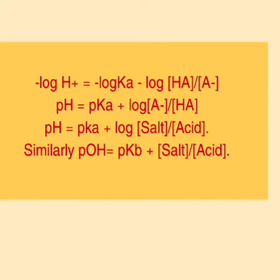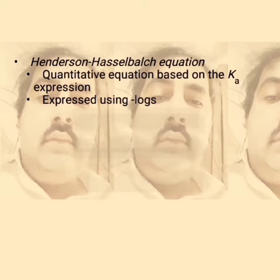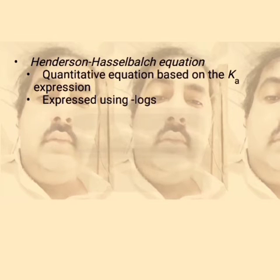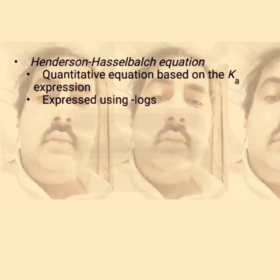Here 'acid' is perhaps wrongly written; it should be 'base.' So pOH = pKb + log([salt]/[base]). This gives the quantitative relationship between the dissociation constant for acid and pH, and similarly pOH. If we take equal molar amounts of salt to acid ratio, or salt to base ratio, then the pH will equal pKa.